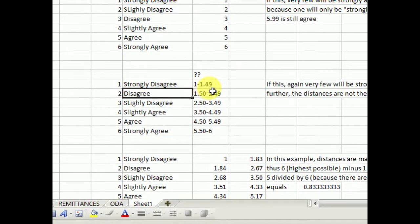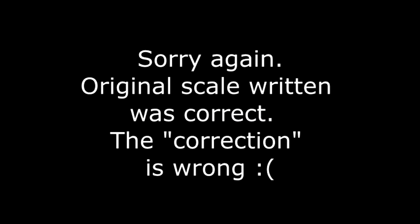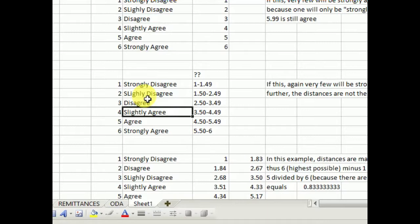Again, if you go to this one, this is what we've been using. If 1 to 1.49, strongly disagree, because if it gets to 1.5, then by rounding off, you get to disagree, and then if it goes to 2.49, you go to slightly. Again, this is a mistake, so sorry about that. So if you go to 2.5, that's disagree. If you go to 3.5, that's slightly agree, and so on. And the only way that you get to the next scale is because of rounding up.